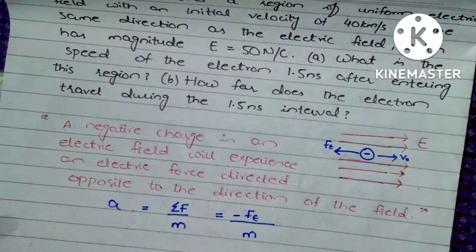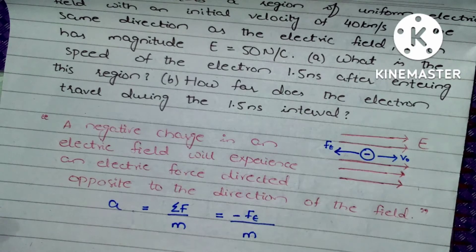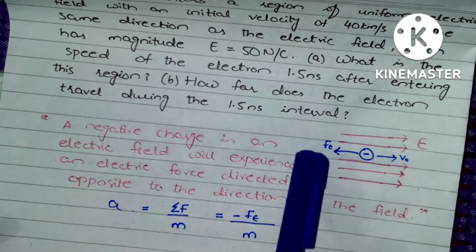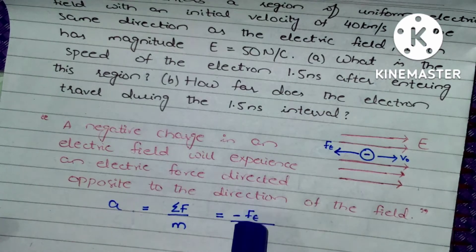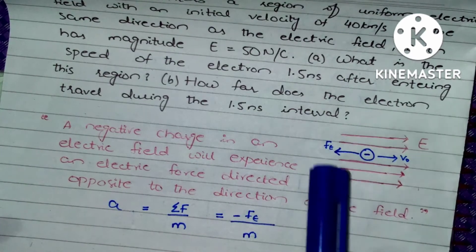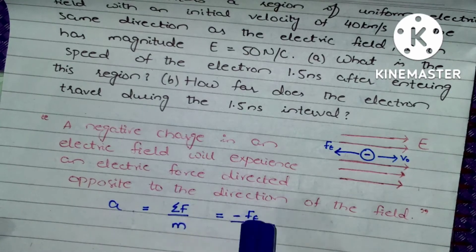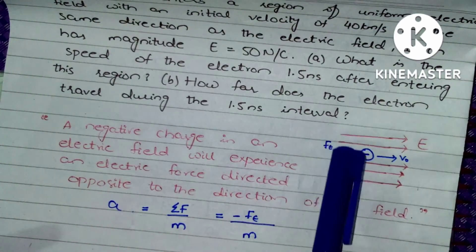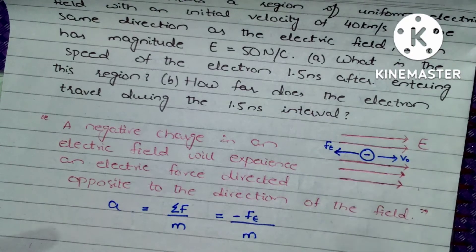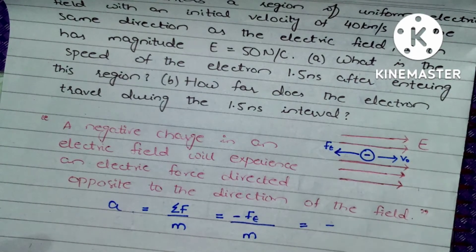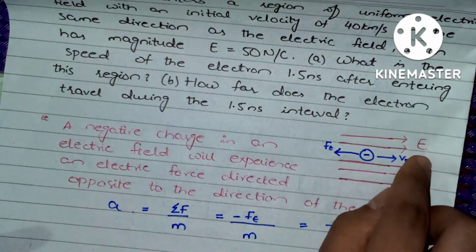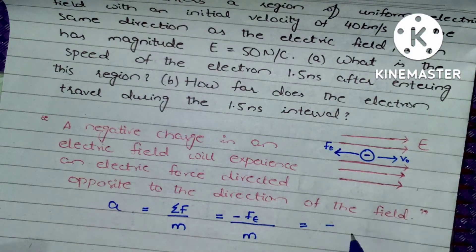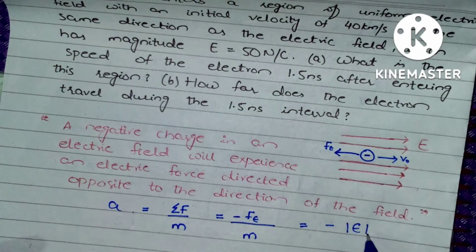We know that the acceleration of a body is given by the sum of all forces divided by the mass. In this case, we only have one force, the electrical force Fe. But do not forget to substitute a negative sign here because the direction is opposite. So acceleration equals negative Fe over M. We know that electric field is the product of magnitude E and charge Q, so we replace Fe with E·Q, giving acceleration = -EQ/M.